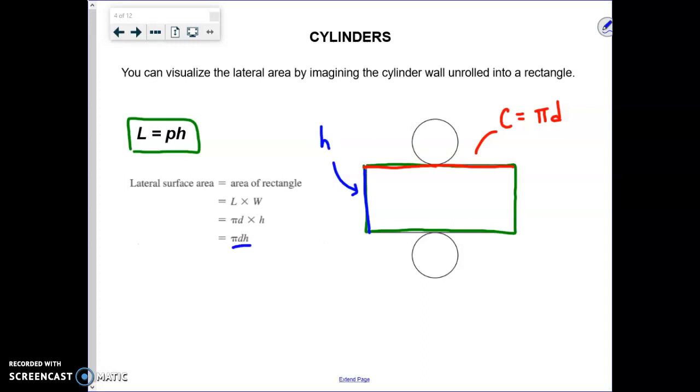The altitude is labeled h. So this formula is basically saying: to find the lateral area, take the perimeter of one of these circular bases, which is π times diameter, and multiply it times the height of your cylinder. This is the formula L = ph that they give you on your formula sheet.